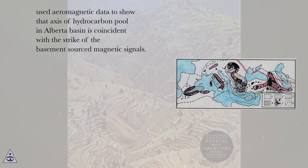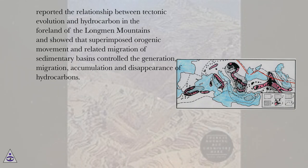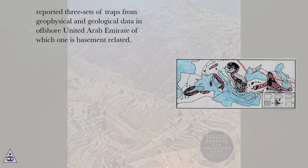Prior work used aeromagnetic data to show that the axis of hydrocarbon pools in the Alberta Basin is coincident with the strike of the basement-sourced magnetic signals. Other studies reported the relationship between tectonic evolution and hydrocarbon in the foreland of the Longland Mountains and showed that superimposed orogenic movement and related migration of sedimentary basins controlled the generation, migration, accumulation and disappearance of hydrocarbons. Additionally, three sets of traps were reported from geophysical and geological data in the offshore United Arab Emirates, of which one is basement related.